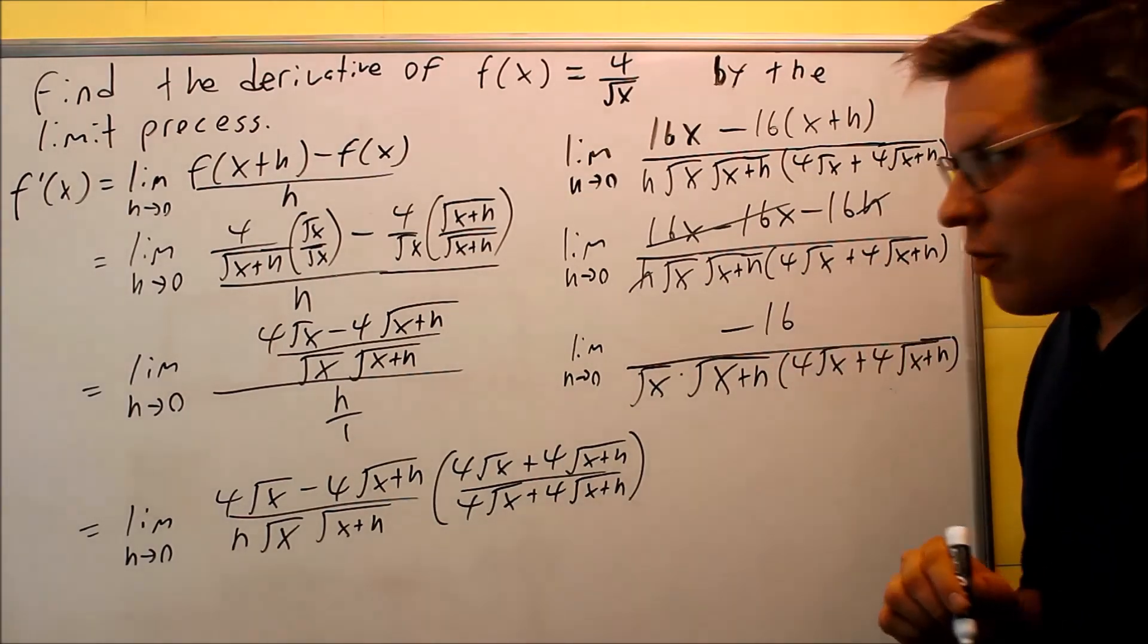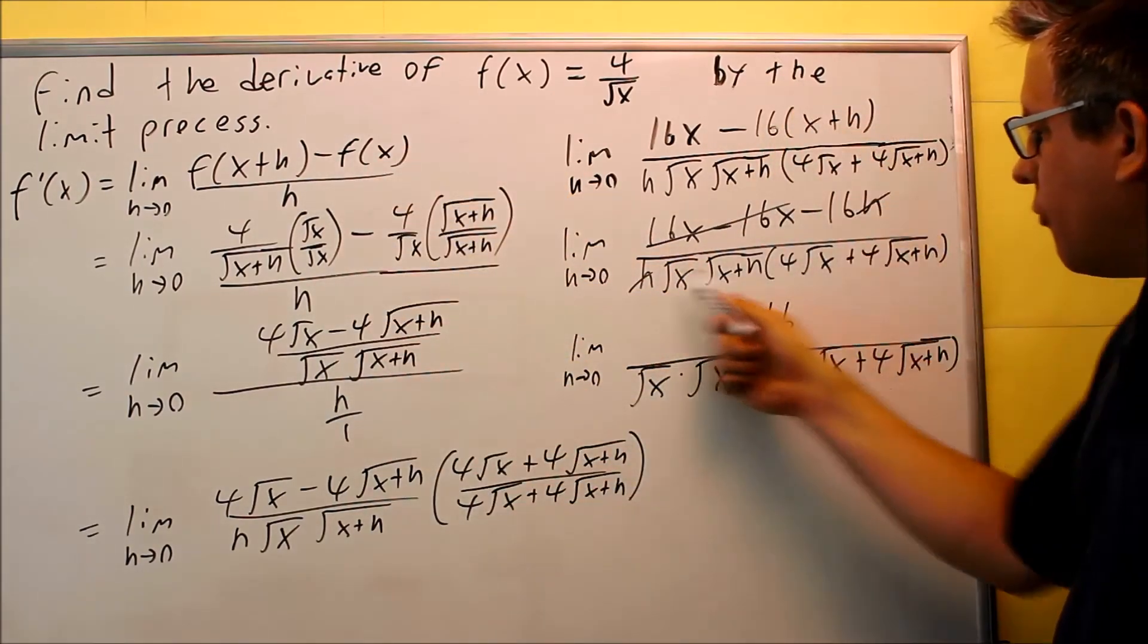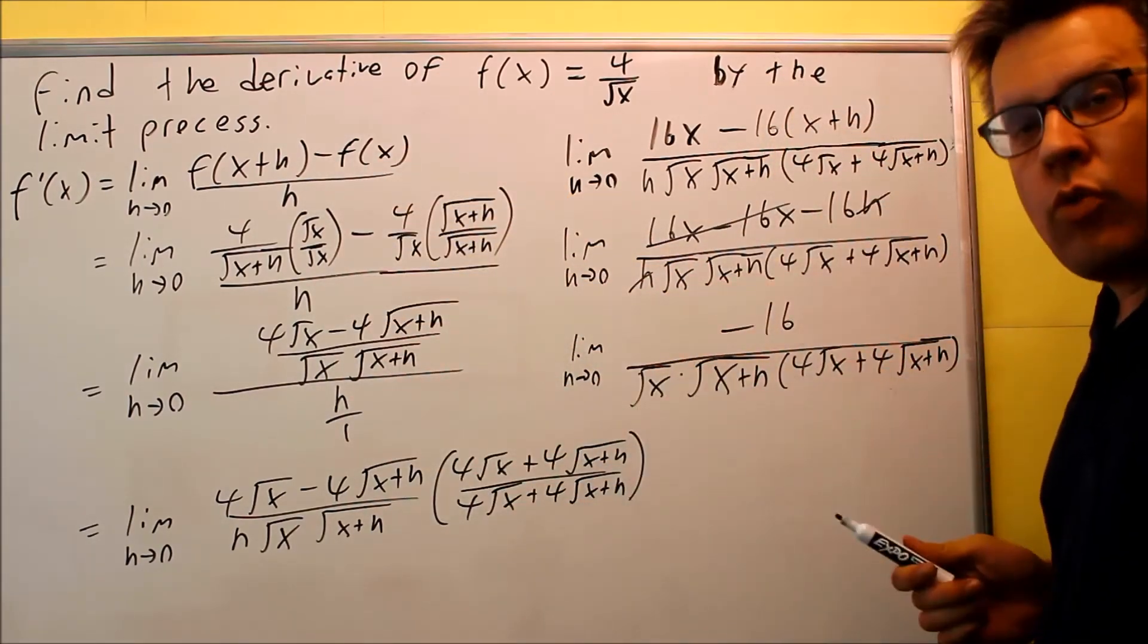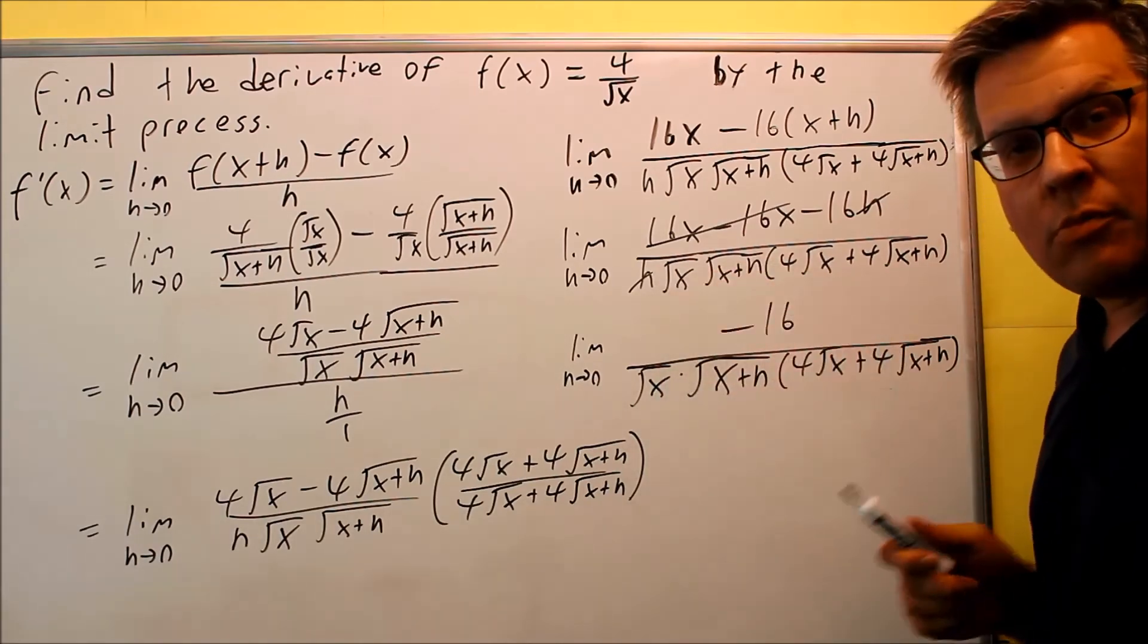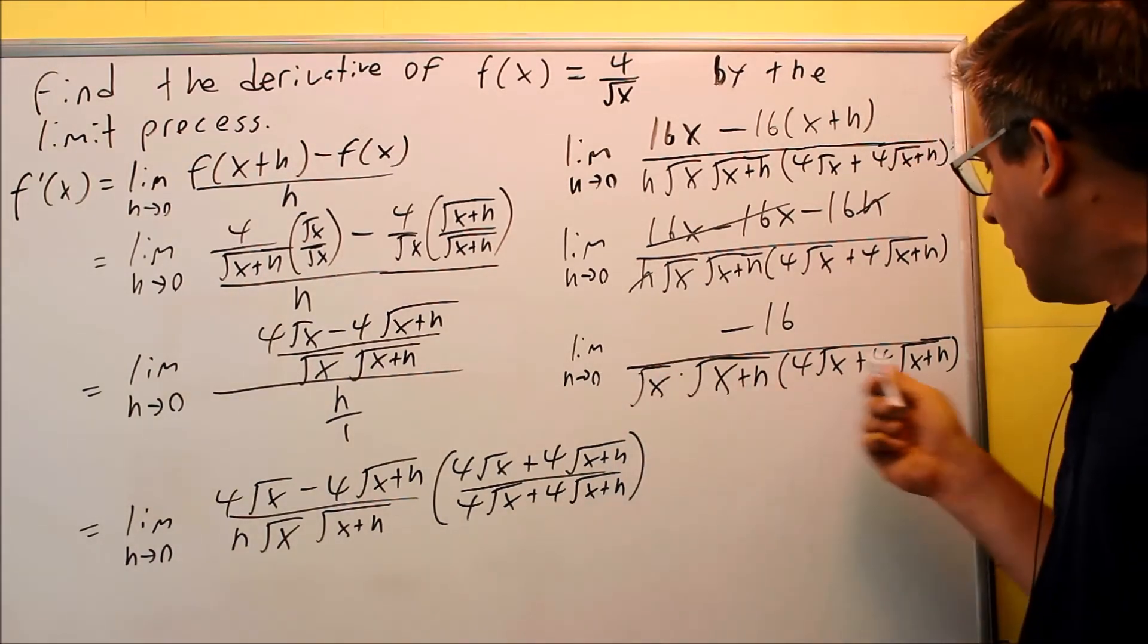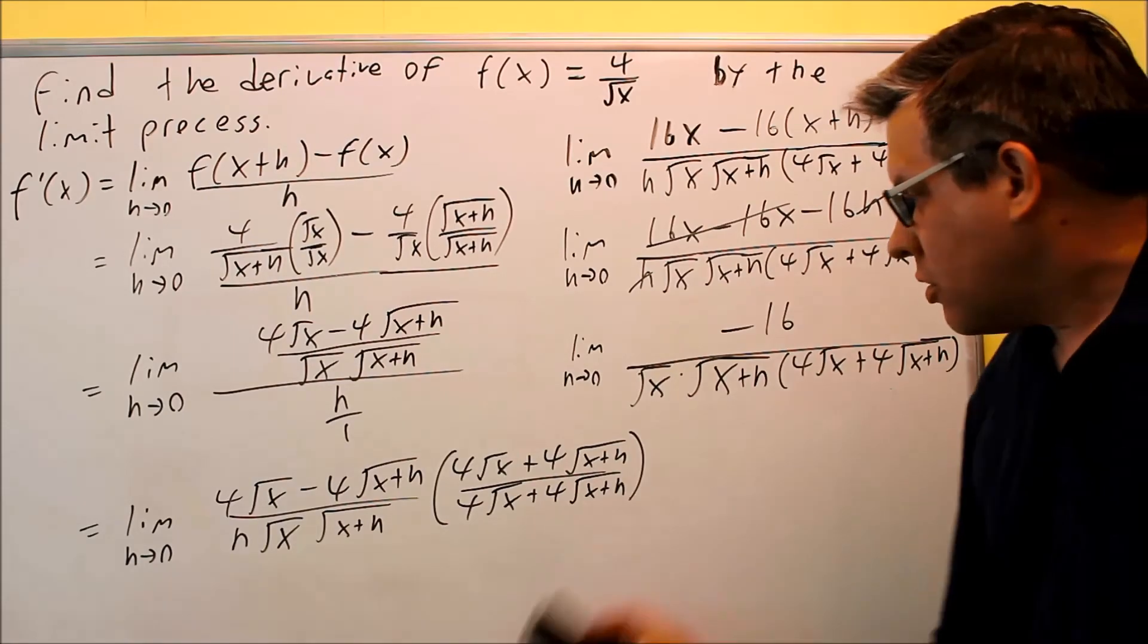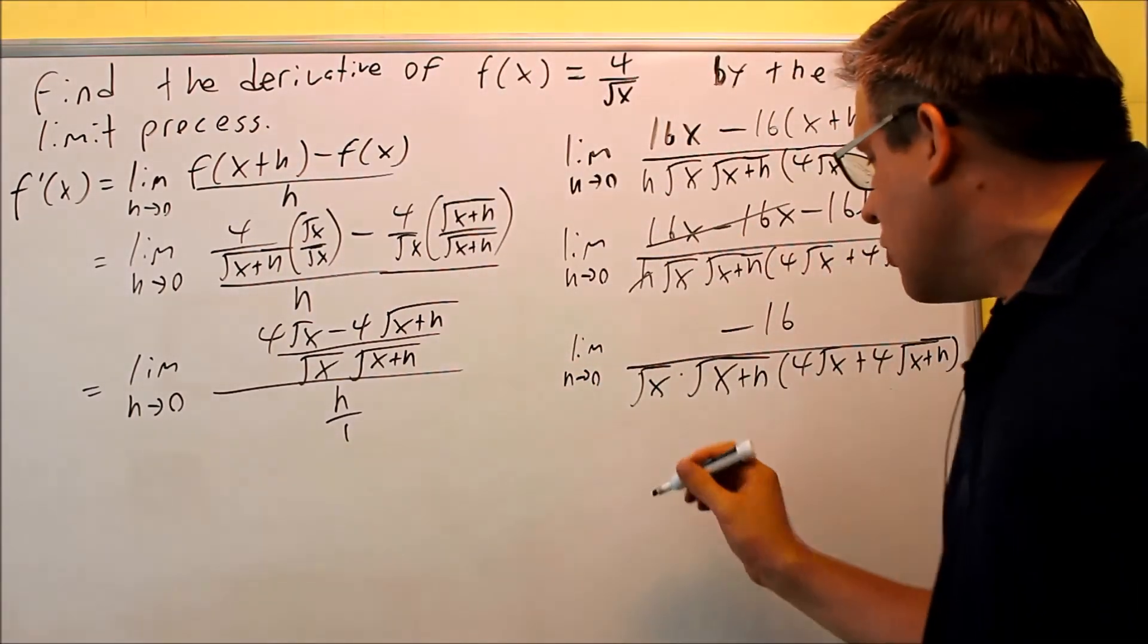So hopefully you guys are still with me. So we've gone through all this work down to here. We've finally gotten down to a point where we're ready to put a zero in because we eliminated the h that was on the bottom. Now, we don't have division by zero happening anymore. We can plug the zero in for each of the h's.